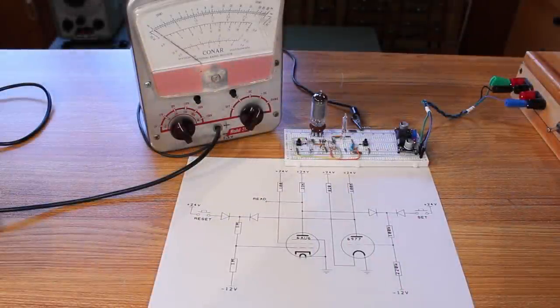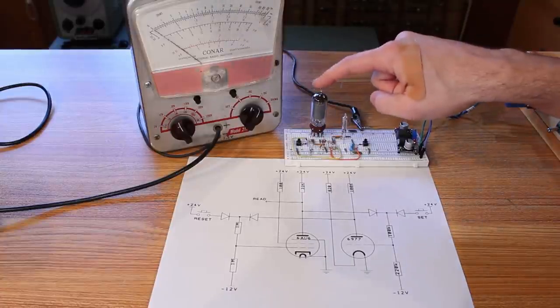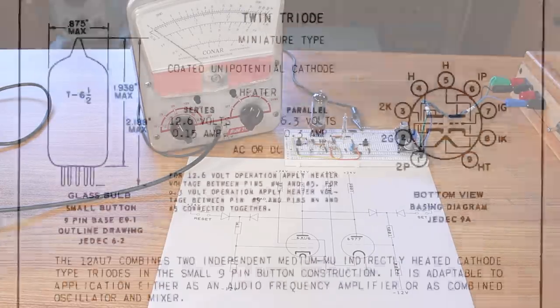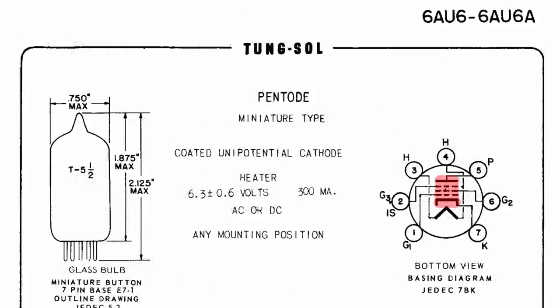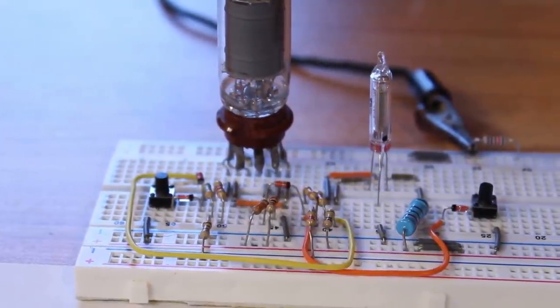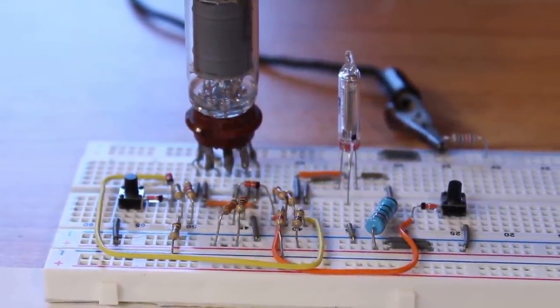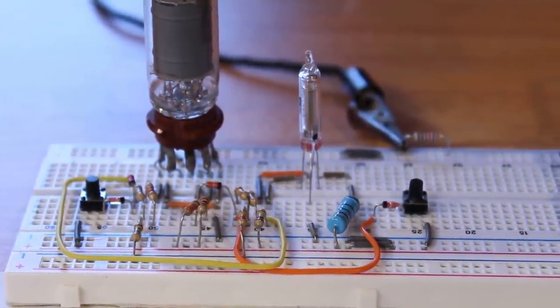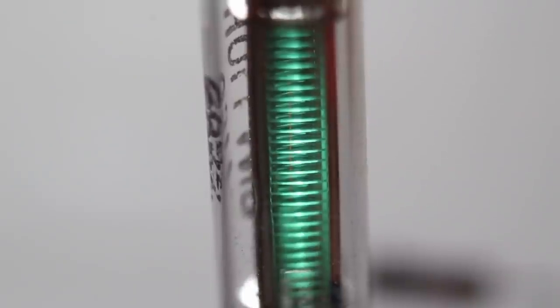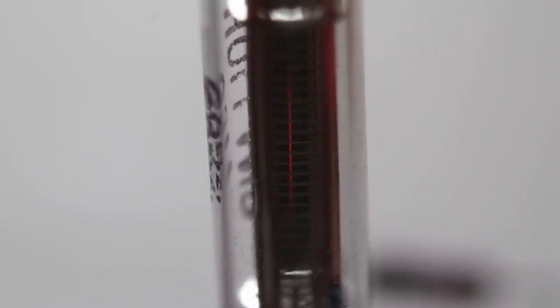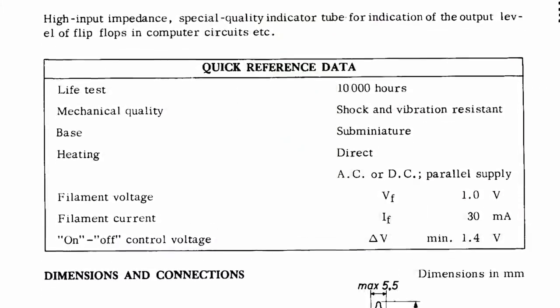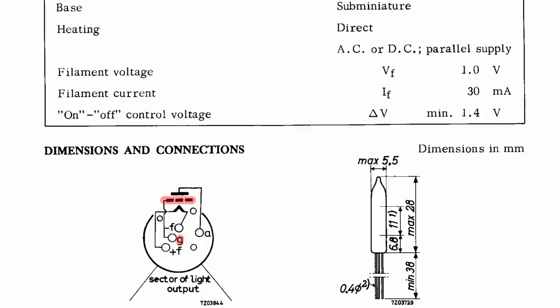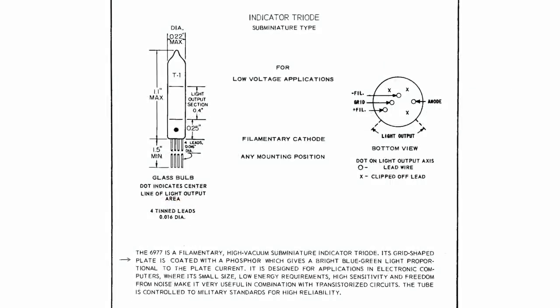All right here we go. This is pretty much exactly what we just took a look at only using 6AU6s. Except you'll notice there's only one 6AU6 in use here. That doesn't make any sense because the 12AU7 has two triodes in it, but the 6AU6 is only a single pentode. So how am I making an SR flip-flop using only a single 6AU6? Well, I've been touting for the last two episodes that I want this memory to be very visual. I'm using the 6977 VFD as my visual indicator. But the 6977 is not just a VFD like the IV-25 and IV-26 that we took a look at earlier. Because it has a grid.